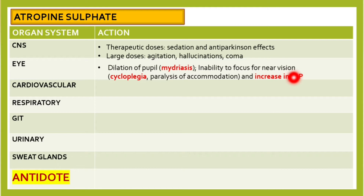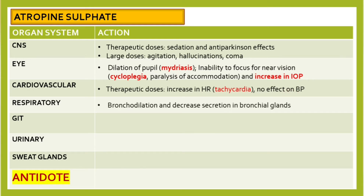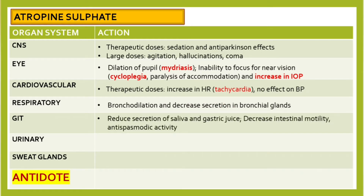In the cardiovascular system, therapeutic doses increase the heart rate — tachycardia — but do not affect blood pressure. In the respiratory system, this drug causes bronchodilation and decreases secretion in bronchial glands. In the gastrointestinal tract, it reduces secretion of saliva and gastric juice, decreases intestinal motility, and has an antispasmodic effect.